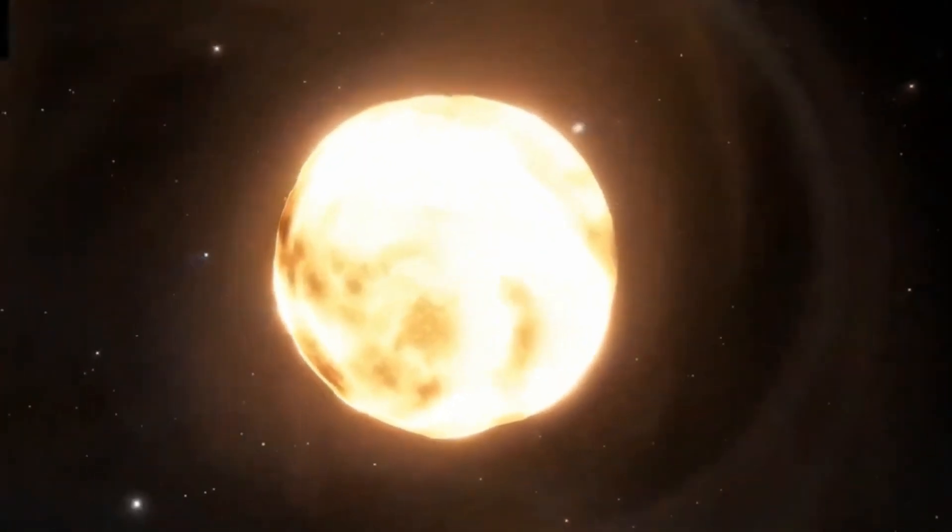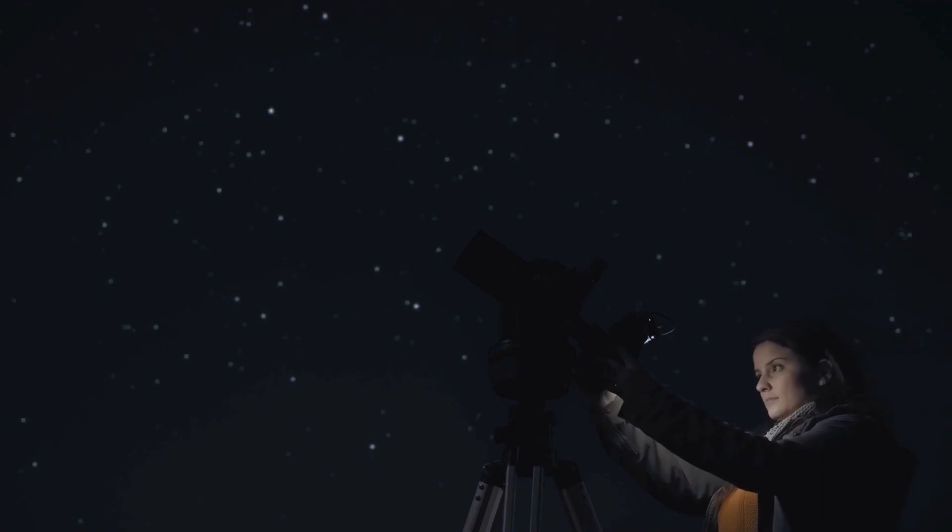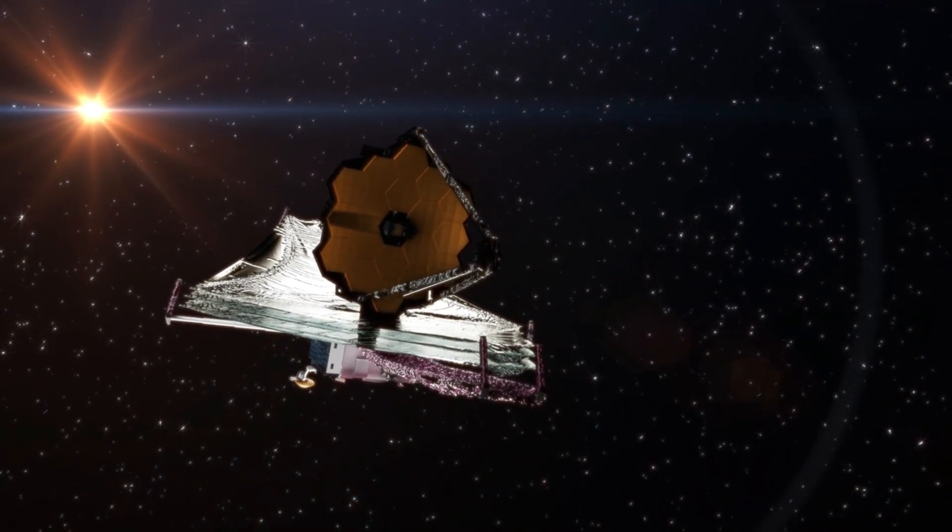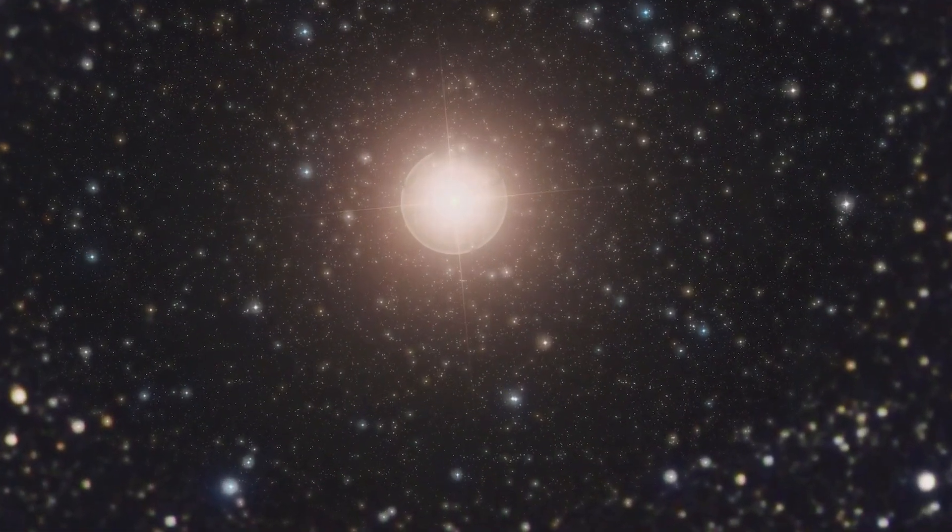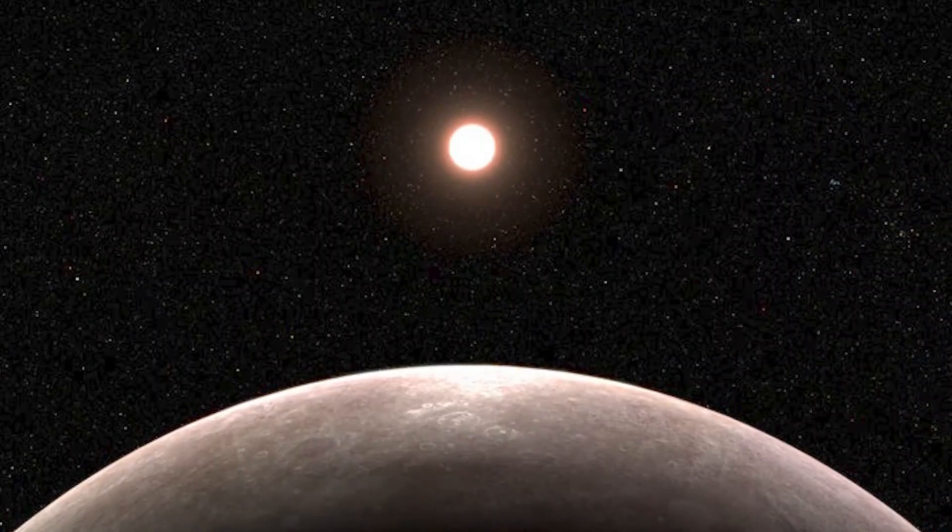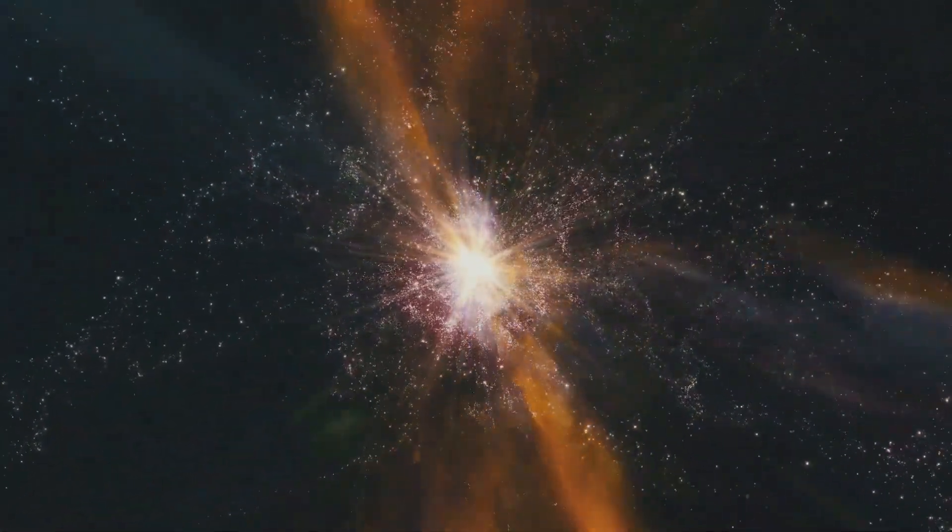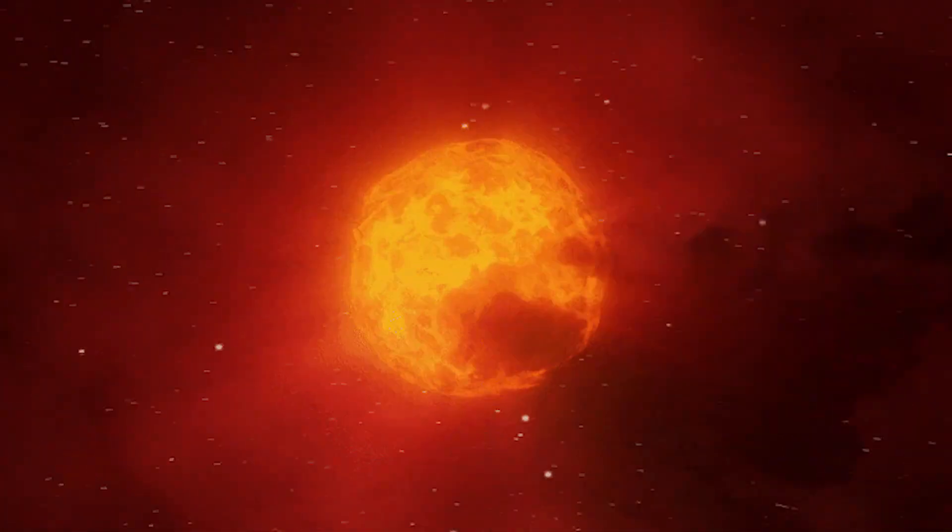People say that the James Webb Space Telescope, JWST, is the most powerful telescope ever made. It has also found planets about the size of Jupiter that are floating in space and not linked to any star. The JWST found about 40 pairs of these objects while it was looking at the Orion Nebula. They are known as Jupiter mass binary objects or jumbos. These things are too small to be stars, but they also don't fit the usual description of a planet because they're not orbiting a parent star.